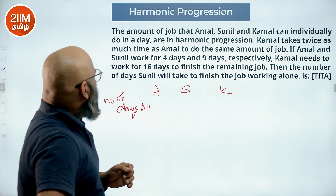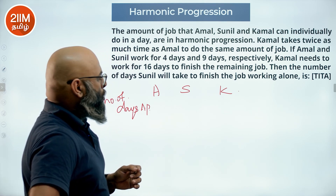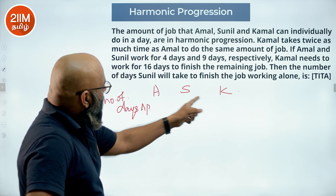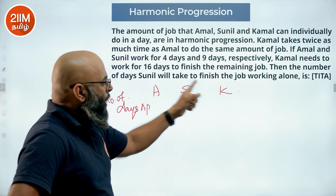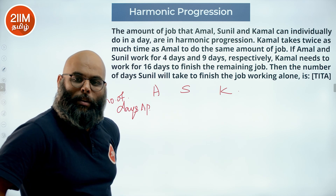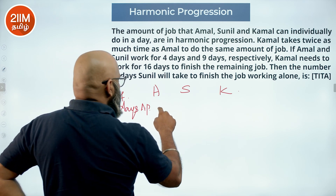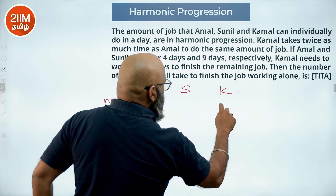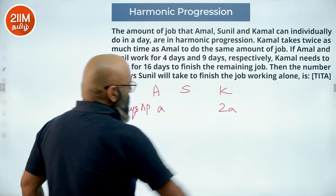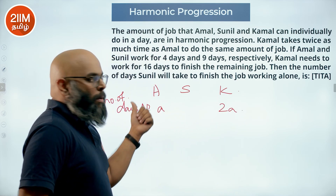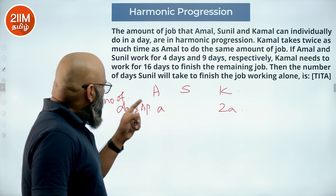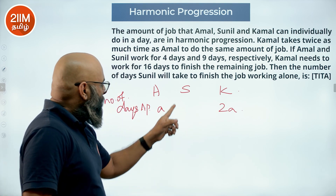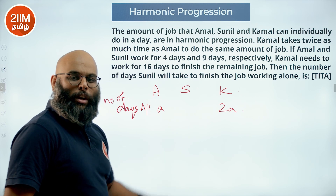Kamal takes twice as much time as Amal to do the same job. So if Amal takes A days, Kamal takes 2A days. We have three terms in AP, so the middle term (Sunil) works out to 1.5A days. So the three day-values in AP are: A, 1.5A, 2A.